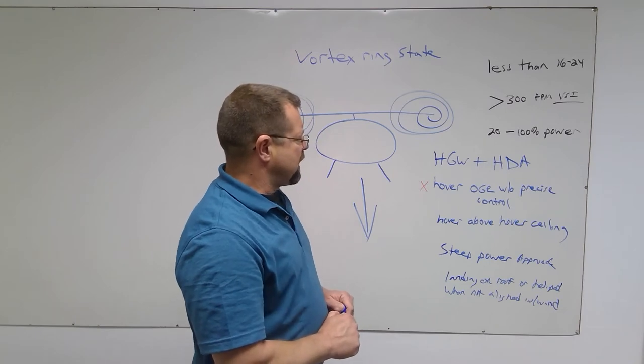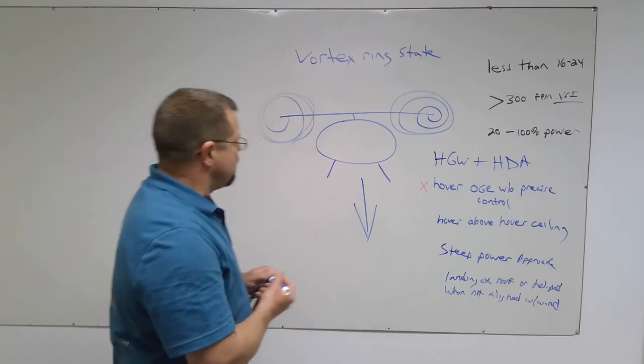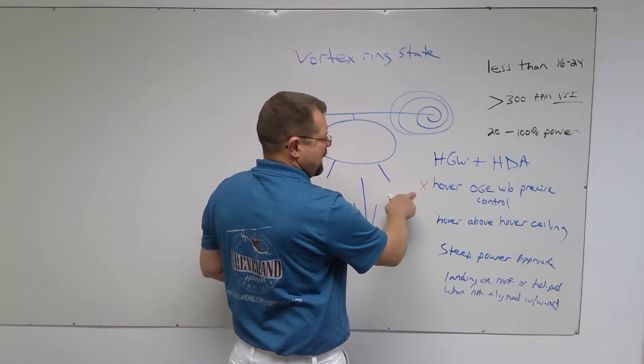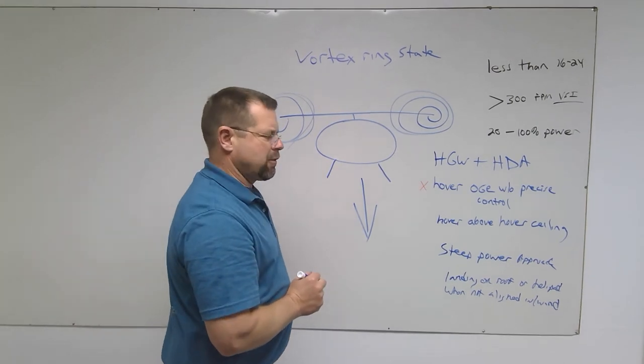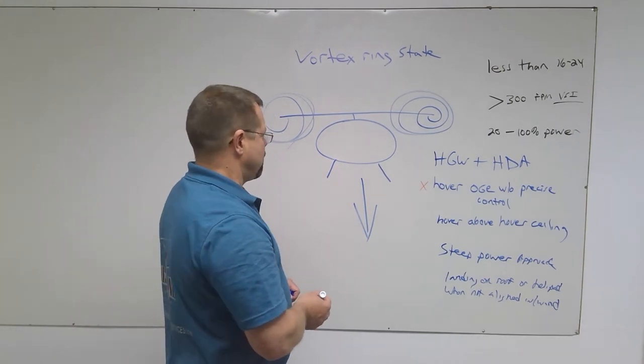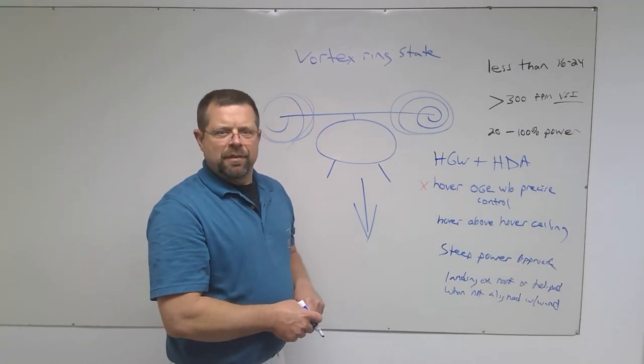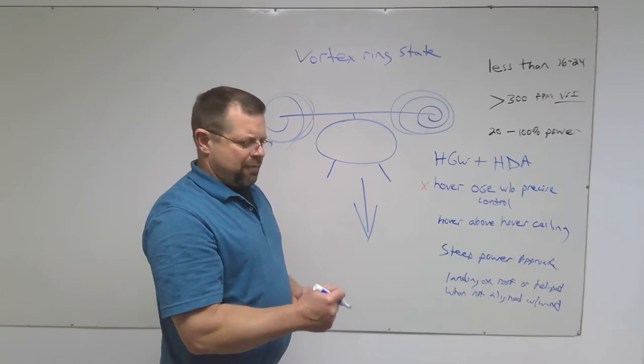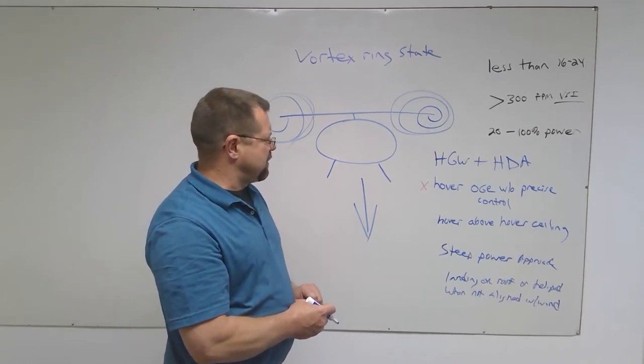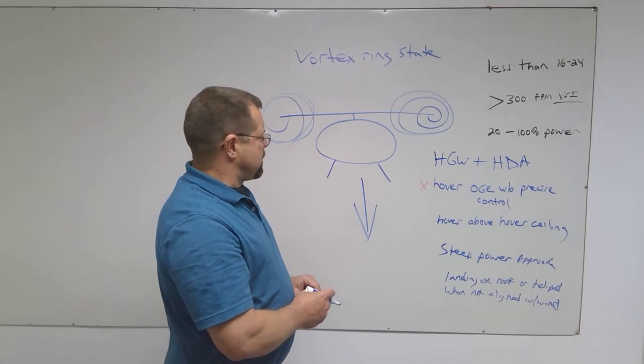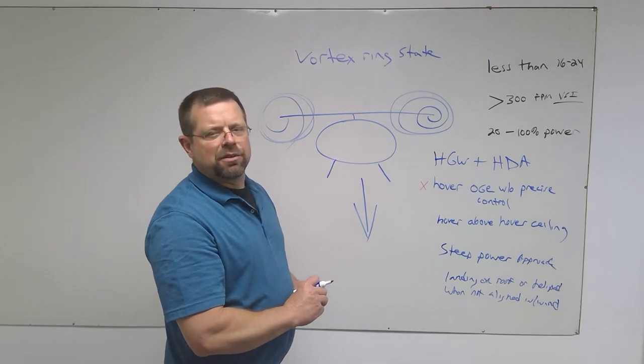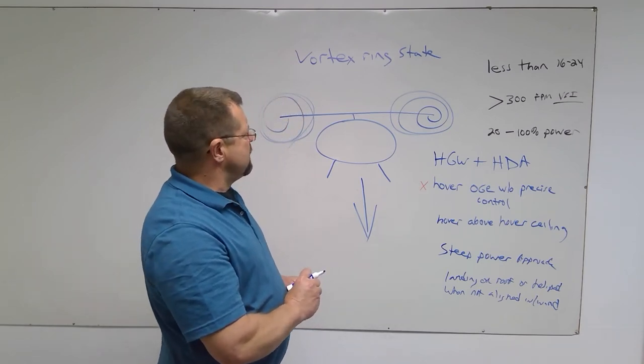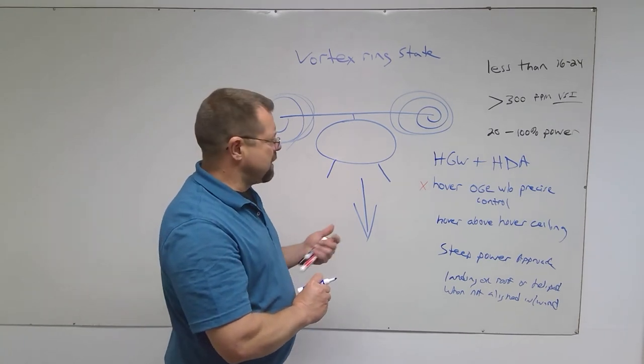So how do we recover from settling with power if we get into settling with power? For the instructor and for the examiner, you're going to get into it by going to a couple thousand feet and you're going to hover out of ground effect without precise control. In other words, you're going to bring it to zero airspeed with plenty of altitude with a tailwind. The aircraft will start to fall. When you get four, five, six, seven hundred on a vertical speed indicator, you've got vibrations going on, the controls are not responsive, sluggish. Then you're simply going to lower the collective a little bit, push forward on the cyclic a little bit and get some speed. The helicopter quickly recovers by getting into clean air. Pretty uneventful to demonstrate this in that manner.